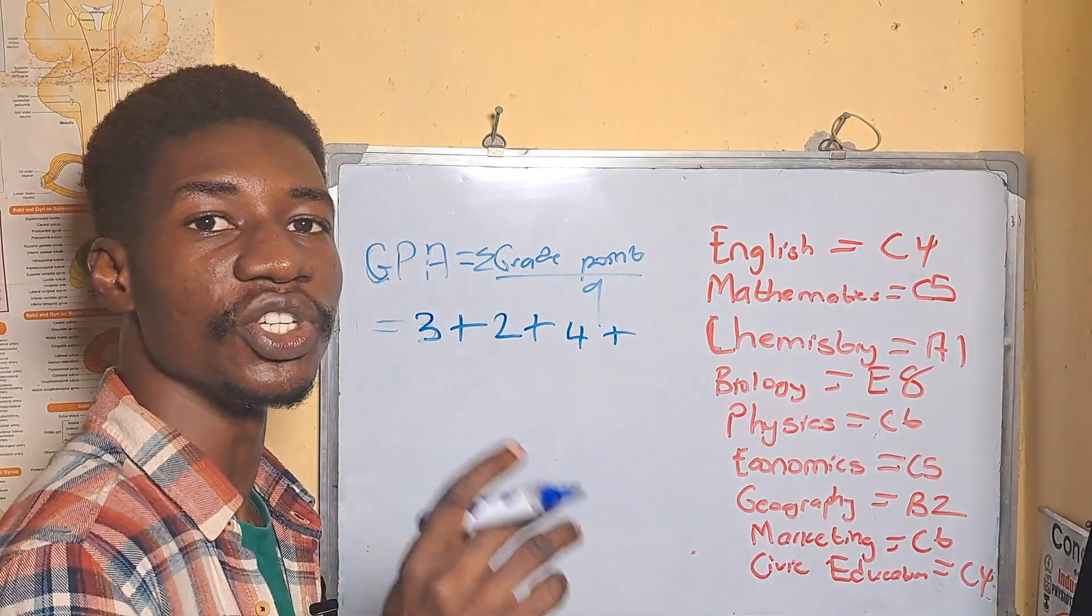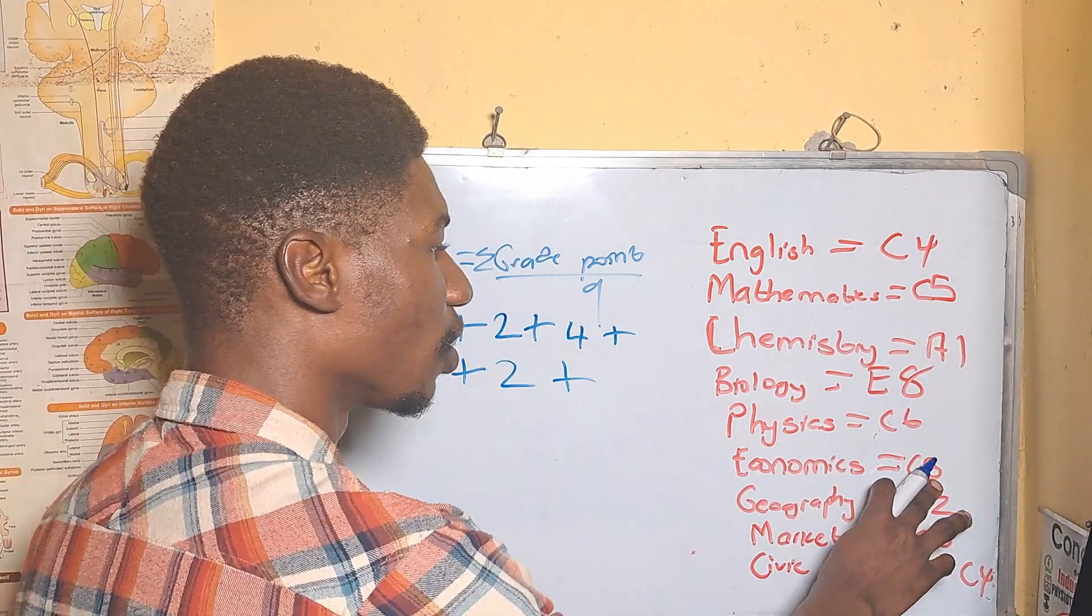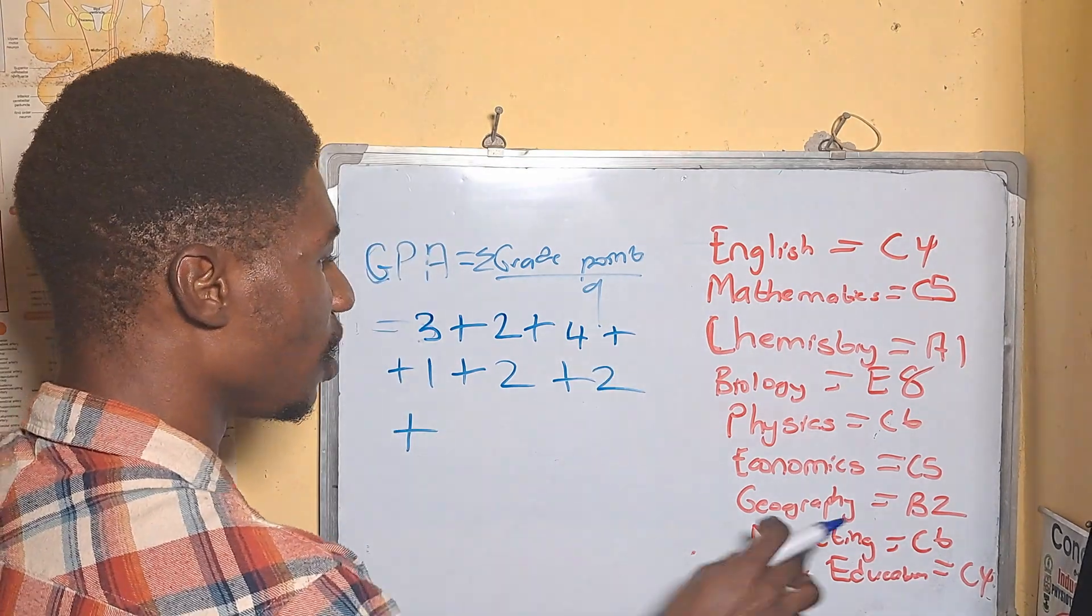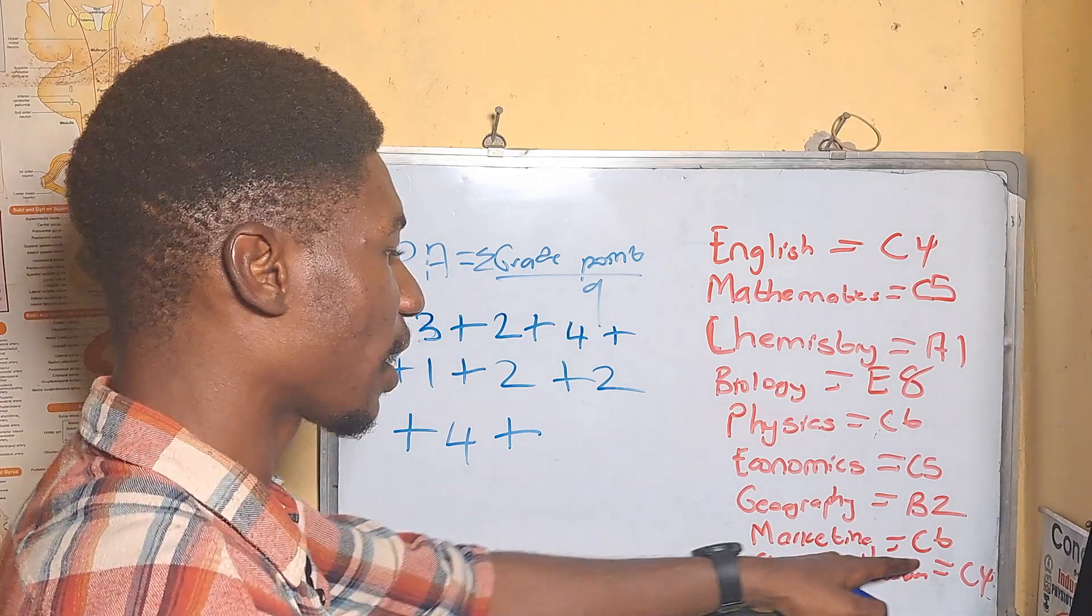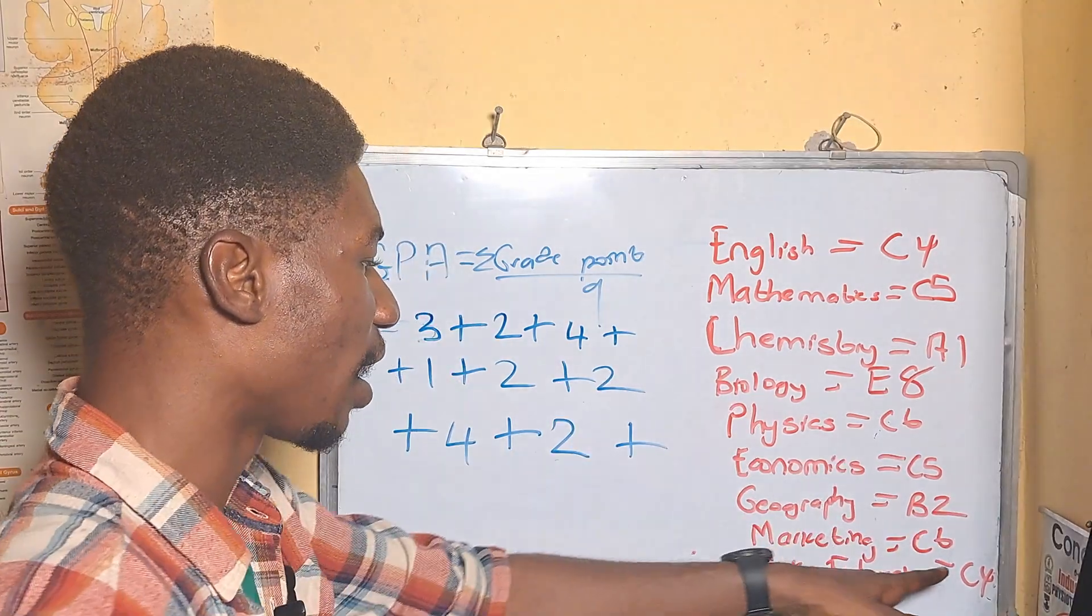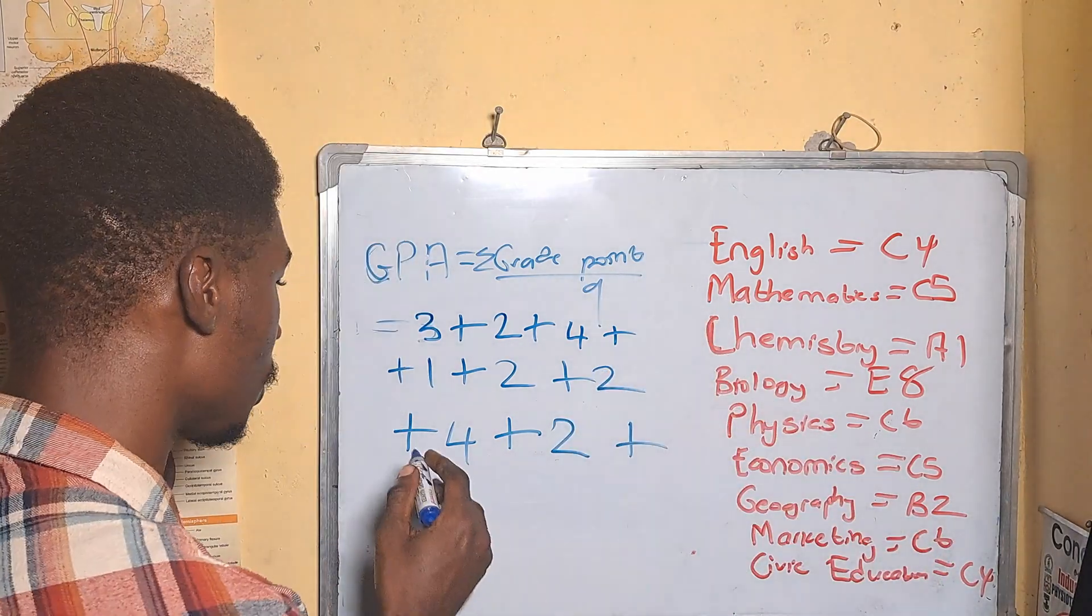Physics is C6 which is two, and economics also is two grade points. Geography is B2 which is four points. Marketing is C6 which is two points. And lastly we have civic education which is C4, and the grade point for C4 is three points.